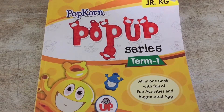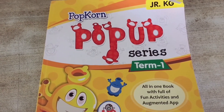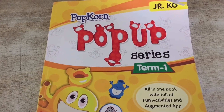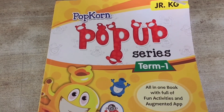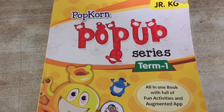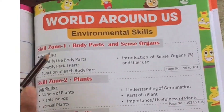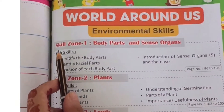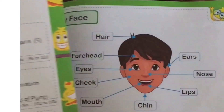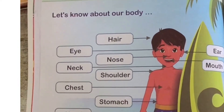Hello students, today we will do exercises related to our parts of the body, which we already learned in a previous lecture. Today we will do exercises from your book. Open your book, Pop-Up series, Term 1. In that, there is a chapter called 'World Around Us' — open it. In that, Skill Zone 1: Body Parts and Sense Organs — we will do that today. But first, we will revise our body parts and sense organs.